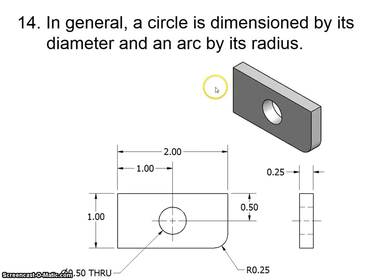Rule 14, in general, a circle is dimensioned by its diameter and arced by its radius. So that's pretty much just a statement. So this part here of the part should be labeled with an R and a half-inch radius. So the center of it would be right about here where the mouse is. And then it would be 0.25 inches that way. And then this here circle is a half-inch in diameter.